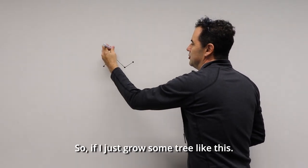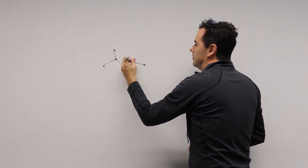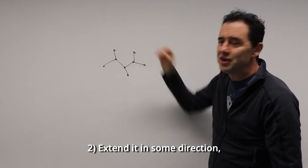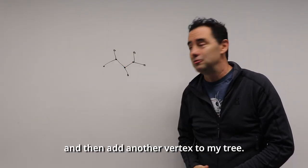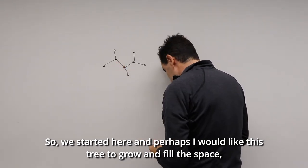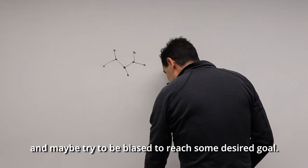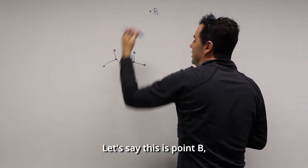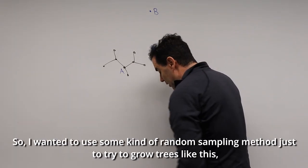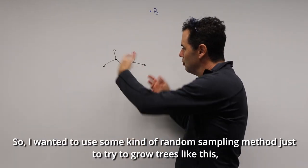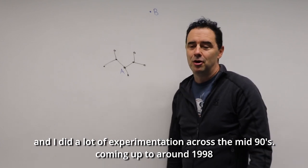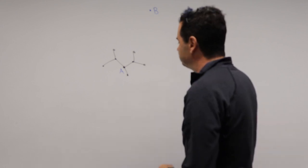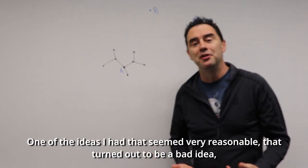If I grow some tree like this, there's a process where I have to: one, select a vertex in each iteration; two, extend it in some direction; and three, add another vertex to the tree. I wanted this tree to grow and fill the space, maybe biased to reach some desired goal — say point B — starting from point A. I wanted to use random sampling methods to grow trees like this, and I did a lot of experimentation across the mid-90s up to around 1998.